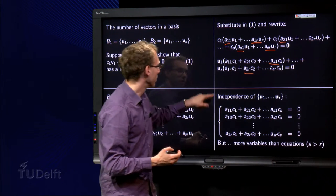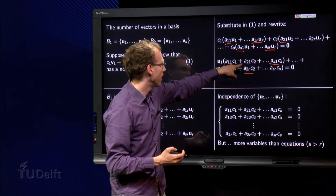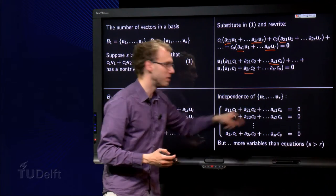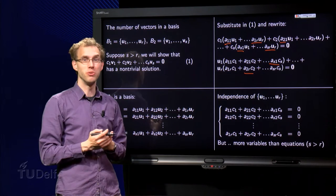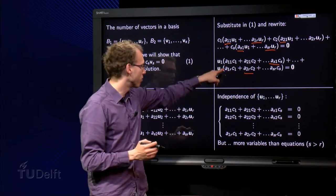So all those numbers here, a₁₁ times c₁ plus a₂₁ times c₂, etc., up to aₛ₁ times cₛ, has to be equal to zero, and the same holds for all the other numbers.